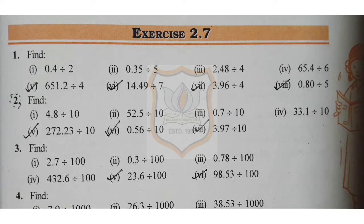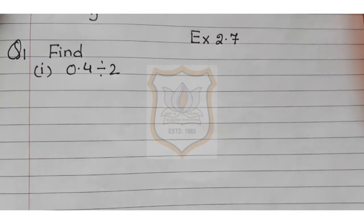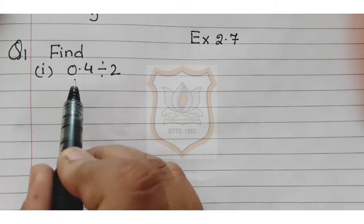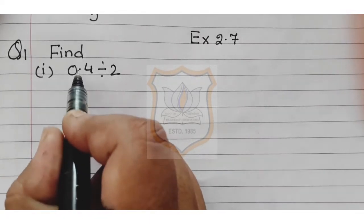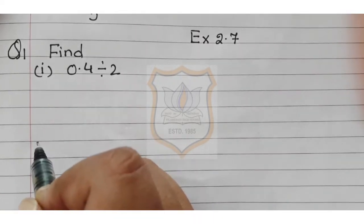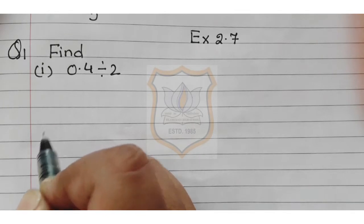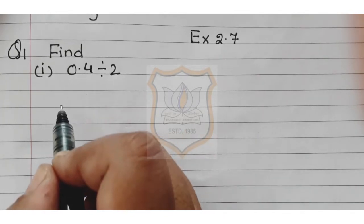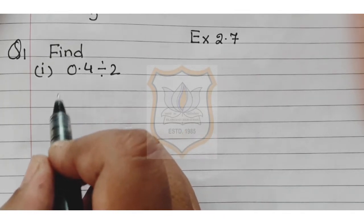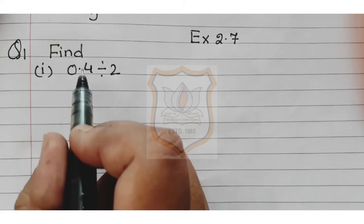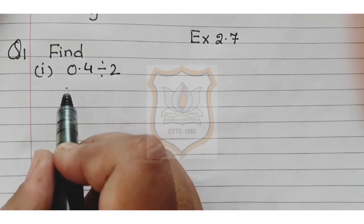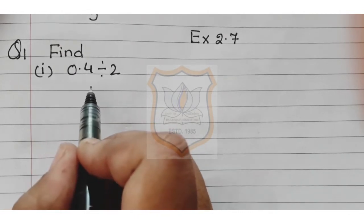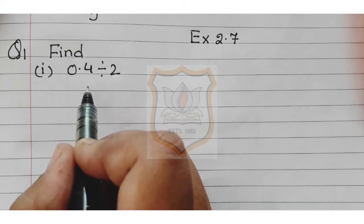Let's start question number 1. Let's solve the first part, that is 0.4 divided by 2. First, I will remove this decimal. The way we put the decimal is the same way we remove it — we can divide this.